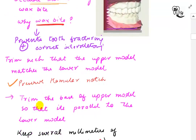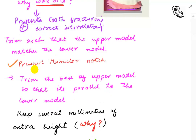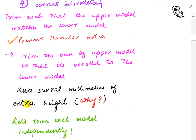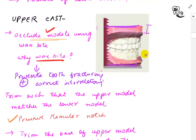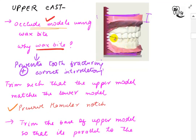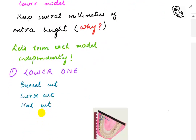We have to preserve the hamular notch, because the hamular notch of the upper model governs the distance. We trim the base of the upper model so that it is parallel to the lower model. We also have to keep several extra millimeters of height, so that when the models are positioned together, the occlusal plane is centered between the base of the upper and the base of the lower model.